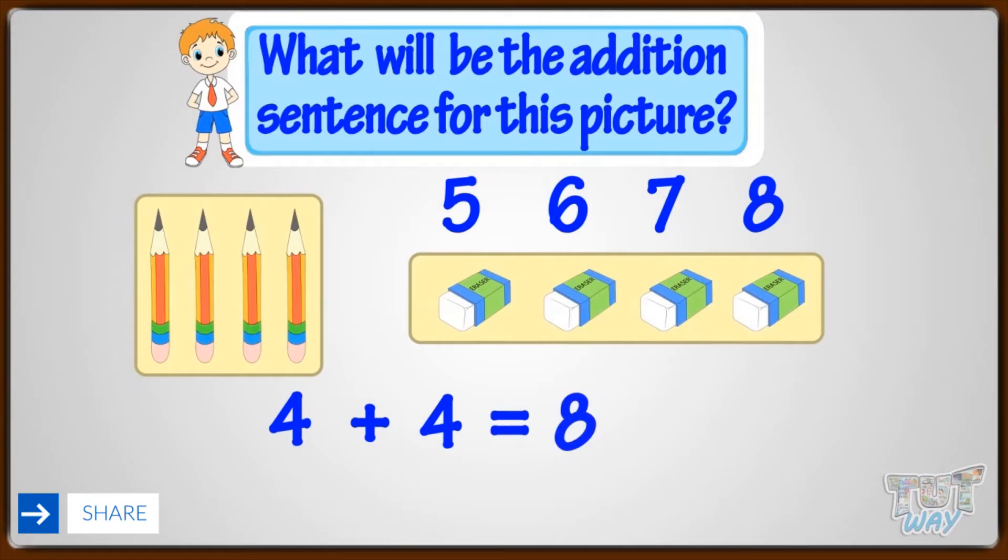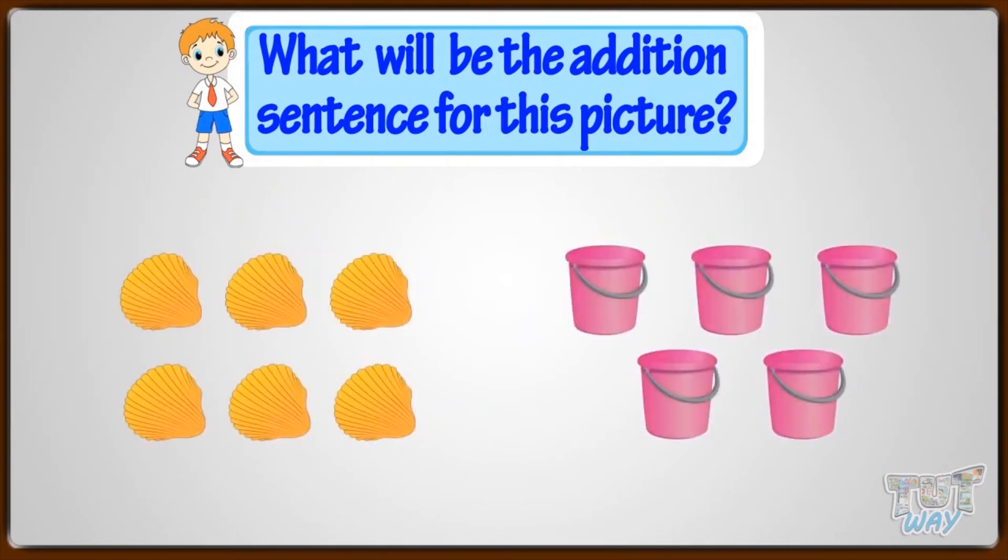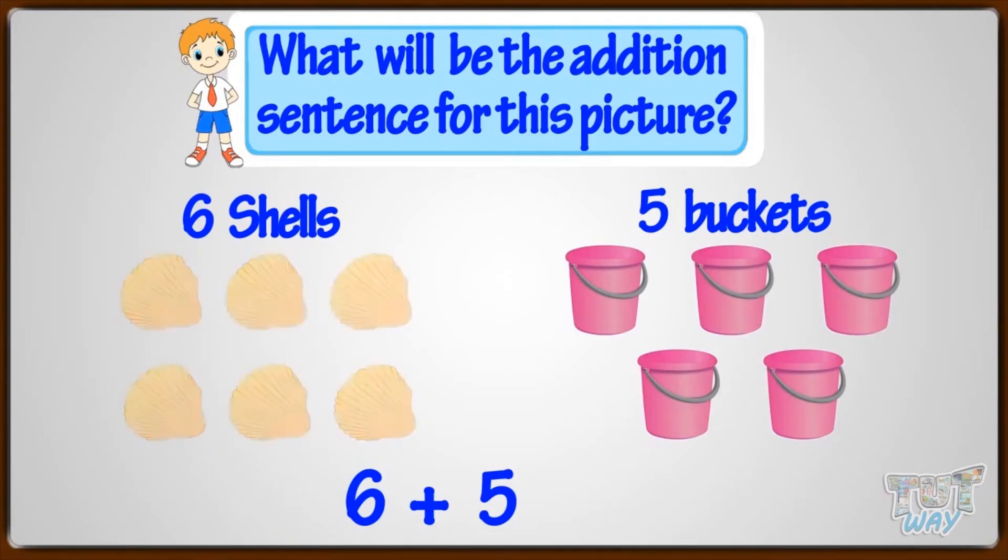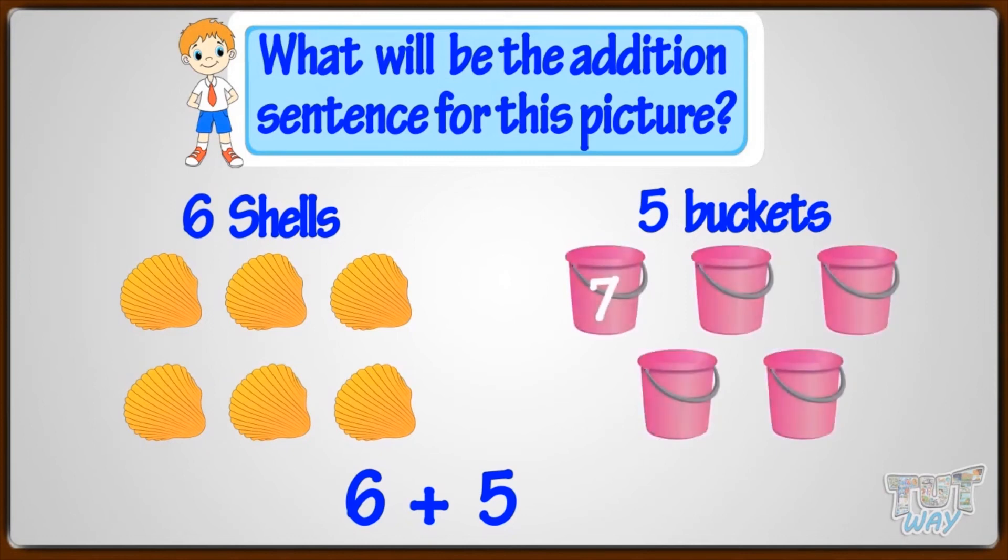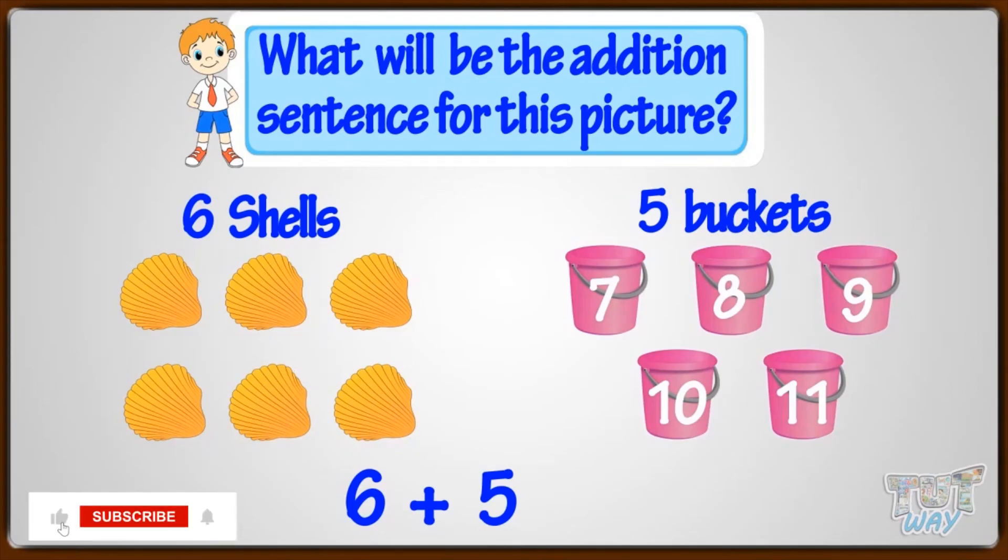Let's take another example. What will be the addition sentence for this picture? There are 6 shells and 5 buckets. So, first write 6 plus 5. Now, count the total number of things. You know shells are 6. So, count from 7, the buckets. 7, 8, 9, 10, 11. So, total number of things are 11. We get 6 plus 5 equals 11. And this is our addition sentence for the picture.